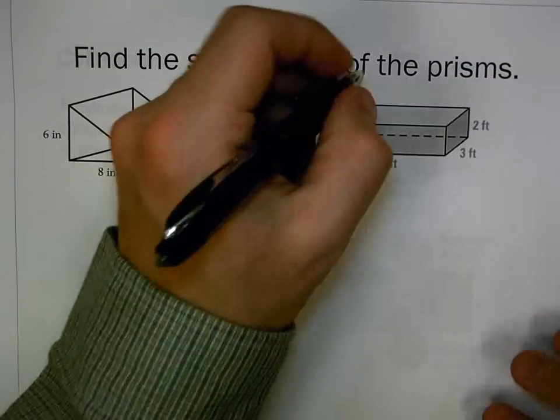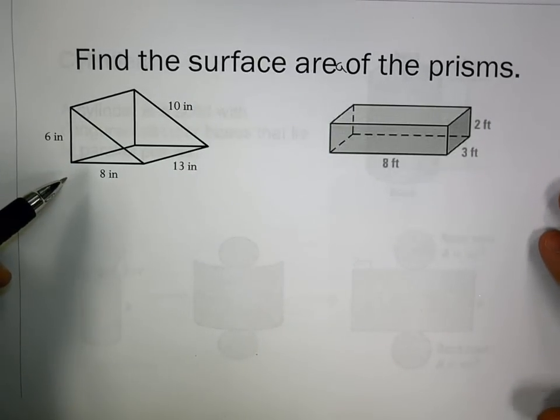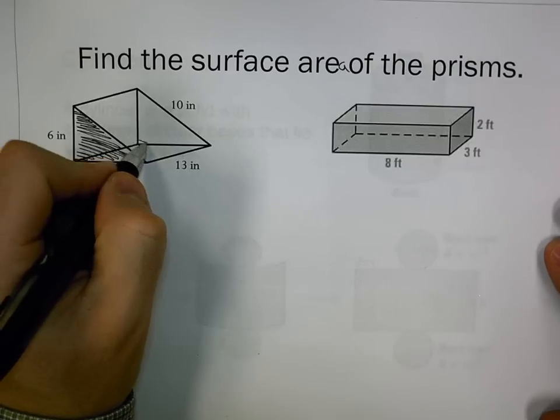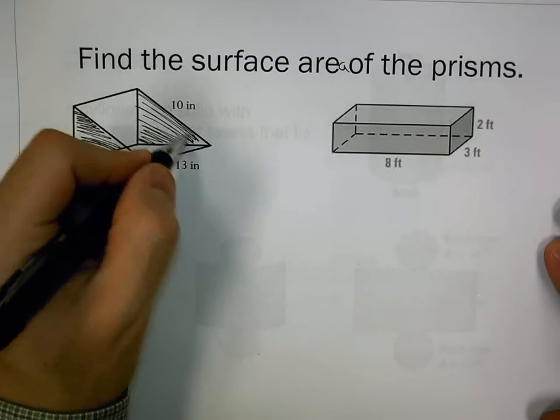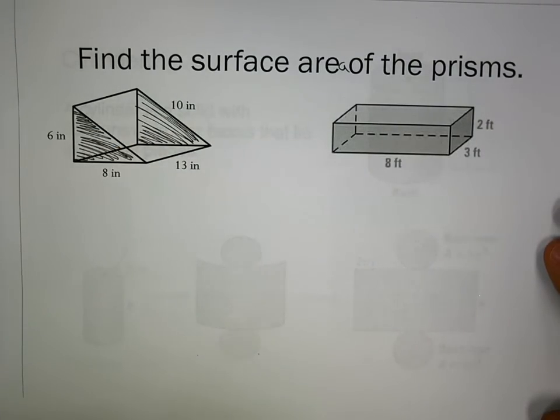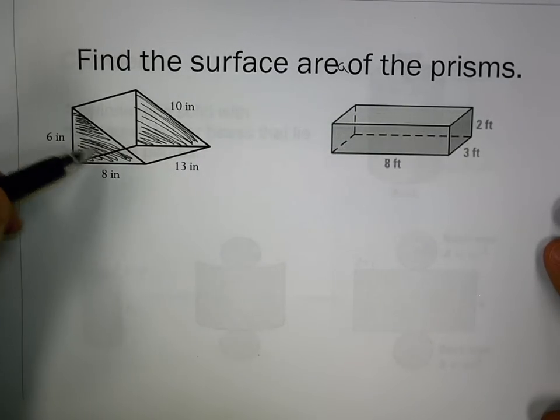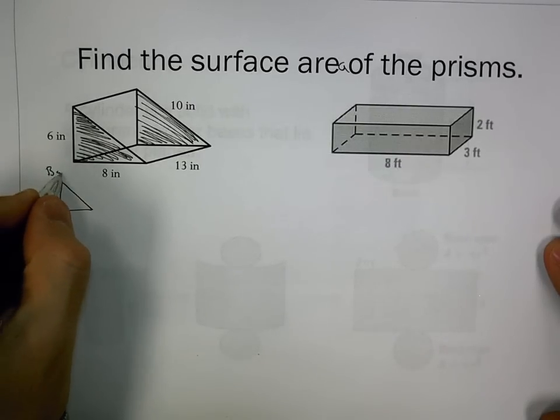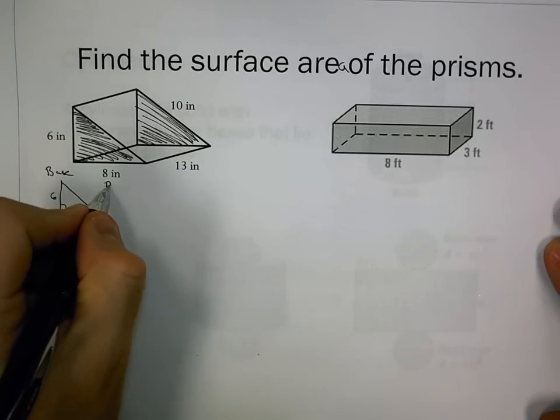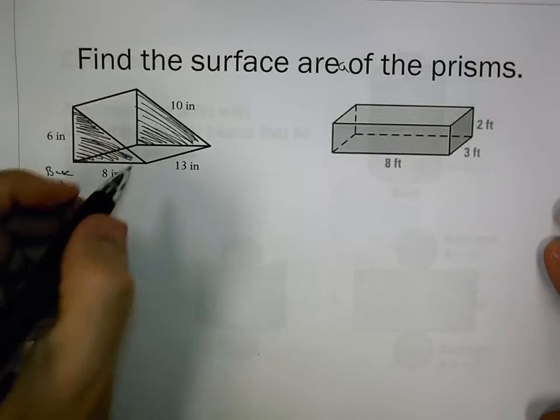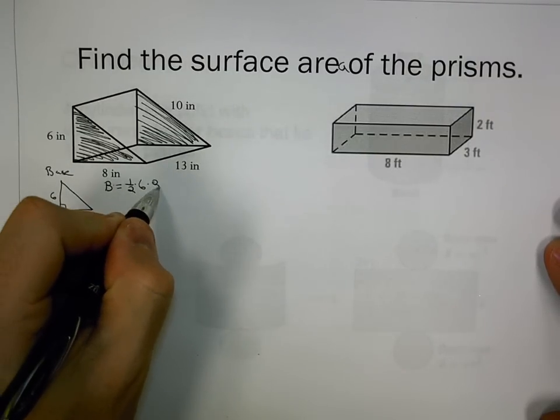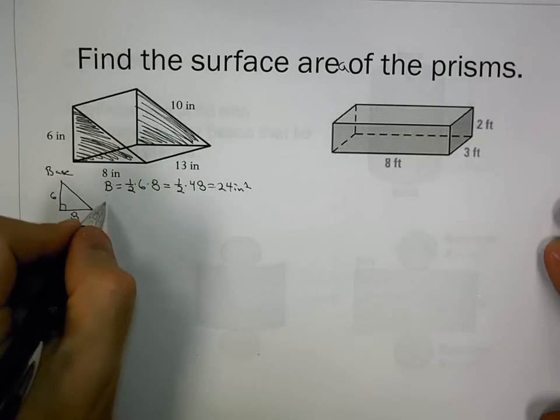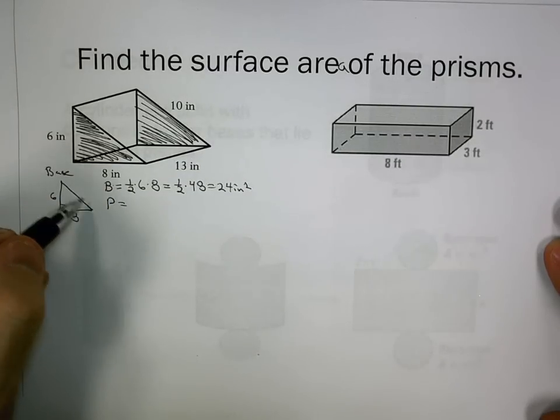For a triangular prism, our bases are these triangles. They need to be congruent and on parallel planes. Drawing the base with sides 6 and 8, the base area is 1/2 times 6 times 8, which is 24 inches squared.